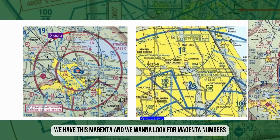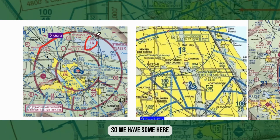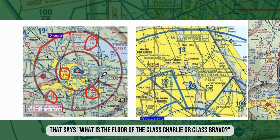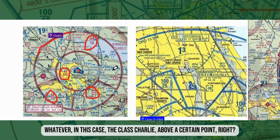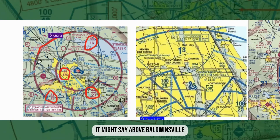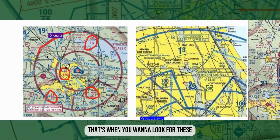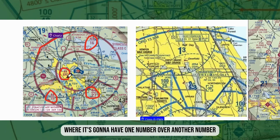For Class C we have this magenta and we want to look for magenta numbers. When you get a question on the FAA written that asks what is the floor of the Class Charlie, Class Bravo, or whatever — in this case Class Charlie — above a certain point, it might say above Baldwinsonville: what is the floor and ceiling of the Class Charlie airspace? That's when you look for these circled magenta numbers, where it has one number over another number.